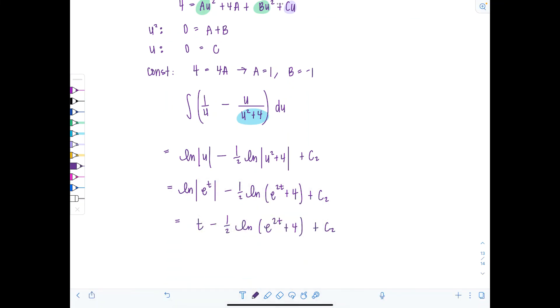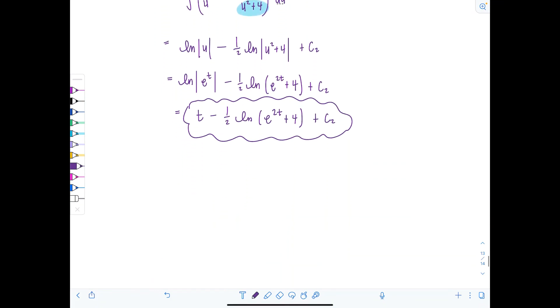So now I can combine this with the first integral we evaluated and we have our final answer. So we now have three halves e to the 2t plus t minus one half natural log e to the 2t plus 4, plus c where c equals c1 plus c2. So fabulous.